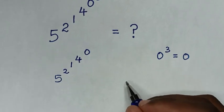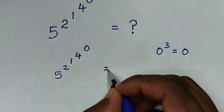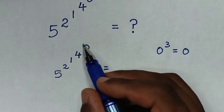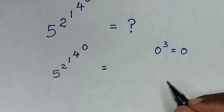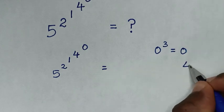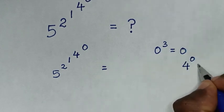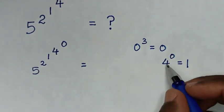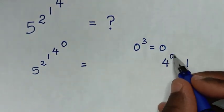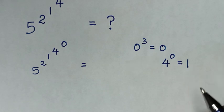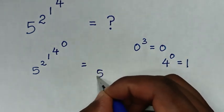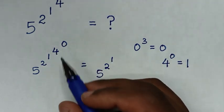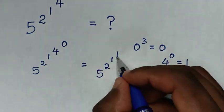In the next step, we will work with these two top powers of 4 power of 0. 4 power of 0 is equal to 1. That means any number power of 0 is equal to 1. So here it will be 5 power of 2 power of 1. From here, 4 power of 0, we substitute this 1.